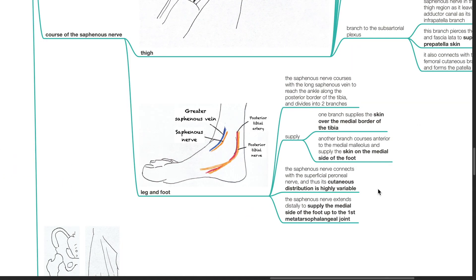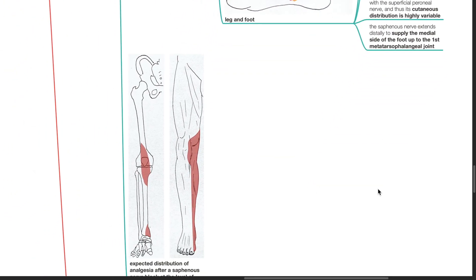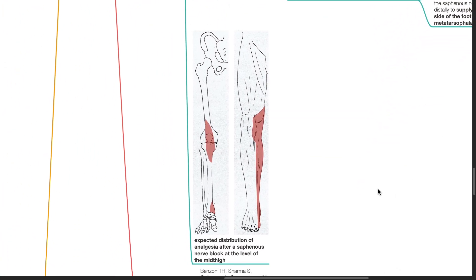In the leg and foot, the saphenous nerve courses with the long saphenous vein to reach the ankle along the posterior border of the tibia, dividing into two branches: one supplying the skin over the medial border of the tibia, and another coursing anterior to the medial malleolus to supply the skin on the medial side of the foot. The saphenous nerve connects with the superficial peroneal nerve, making its cutaneous distribution highly variable. It extends distally to supply the medial side of the foot up to the first metatarsophalangeal joint.